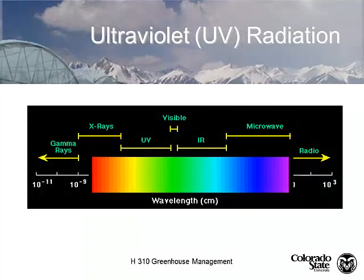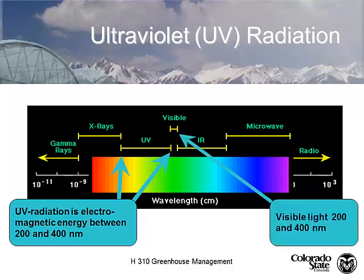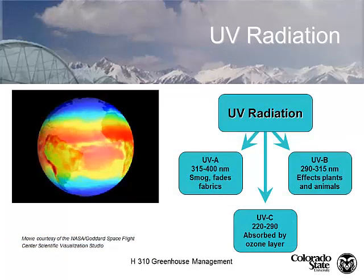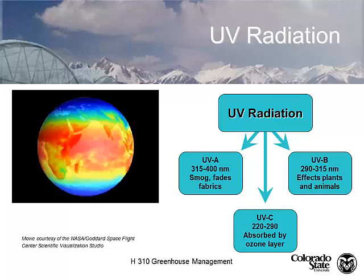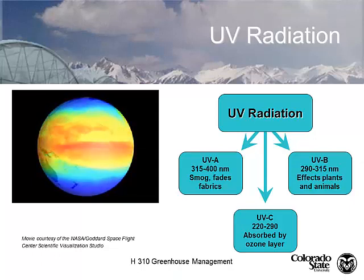Let's start with ultraviolet radiation. Most people think UV radiation is what makes plants grow — no, visible light makes plants grow. Ultraviolet radiation is electromagnetic radiation between 200 and 400 nanometers, not visible light. UV radiation is split into three categories: UVA is 315–400 nm — some know this as a black light — which deteriorates smog, fades fabric, and fades paint.